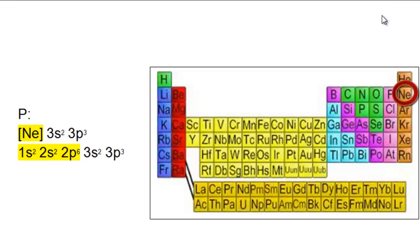The nearest preceding noble gas for phosphorus is neon. Then write the remainder of the electron configuration for phosphorus.